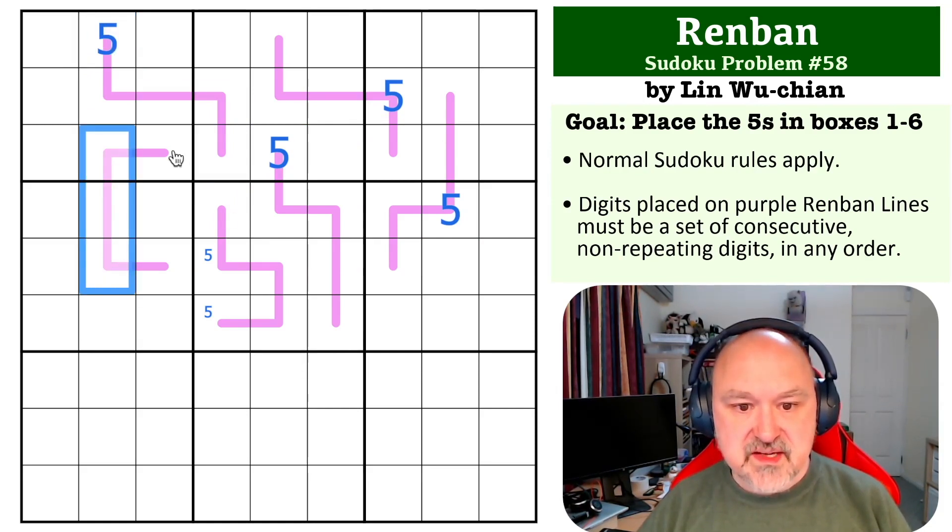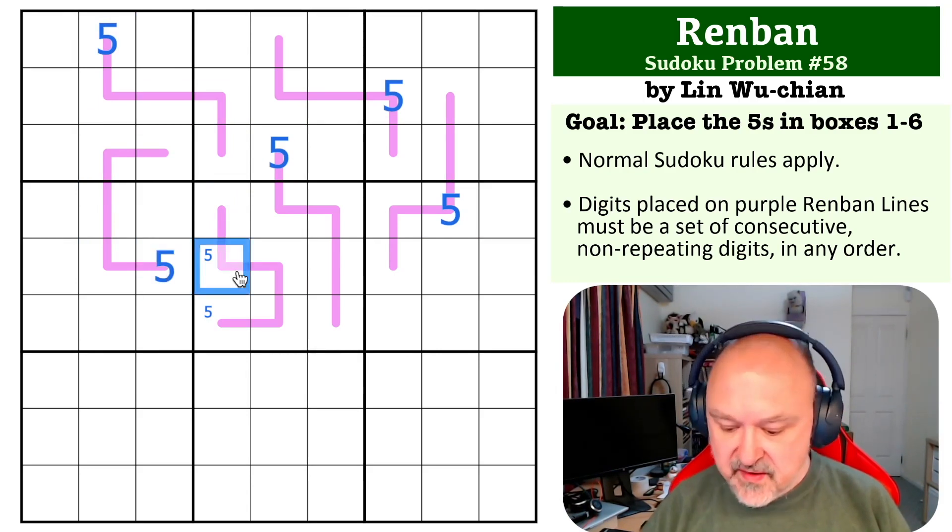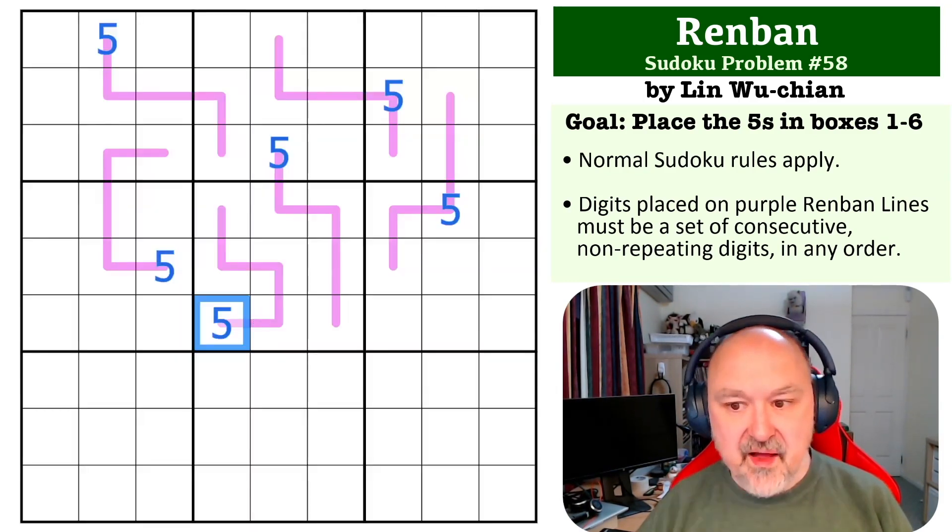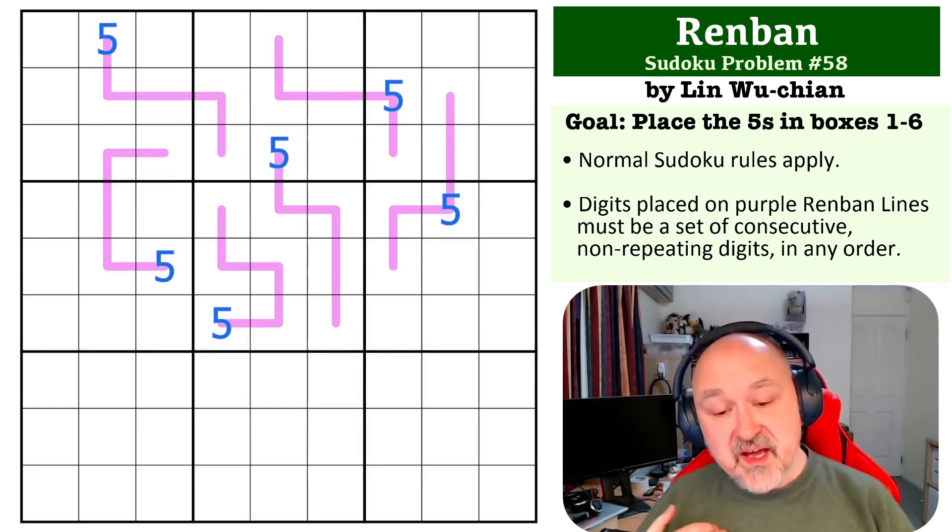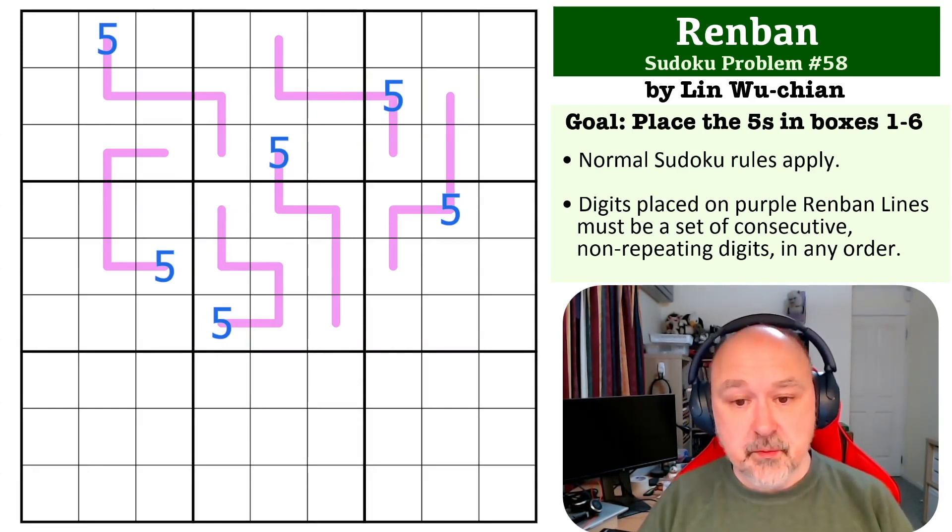Now those three cells and that one are seen on this five cell long Renban line, so that becomes the five. This can't be the five, and this becomes the five. And that's the solution to the problem. It's just some fairly simple geometry, understanding that fives have to go on a five cell long Renban line.